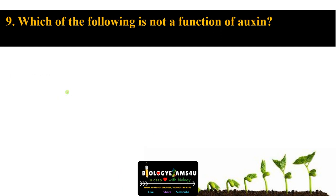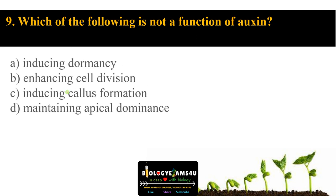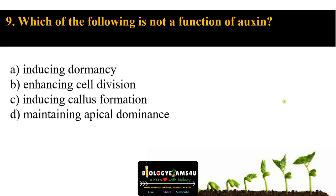Question number nine: which of the following is not a function of auxin? Option A inducing dormancy, option B enhancing cell division, option C inducing callus formation, option D maintaining apical dominance. The question asks for the odd one. Functions of auxin include enhancing cell division, inducing callus formation in tissue culture, and maintaining apical dominance. The odd one is inducing dormancy — auxin actually promotes seed germination by breaking dormancy. So the answer is A.